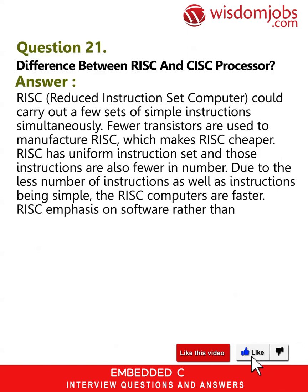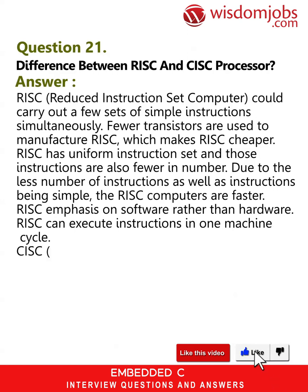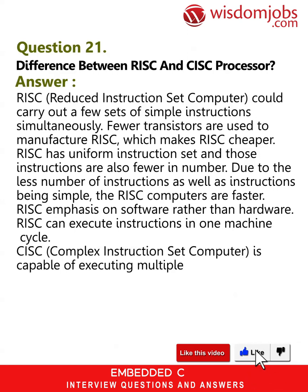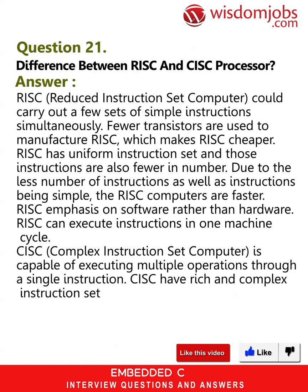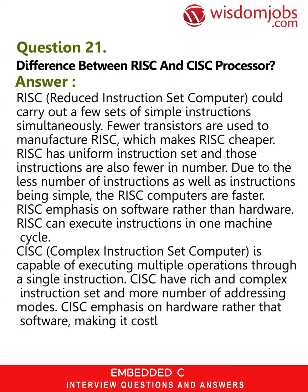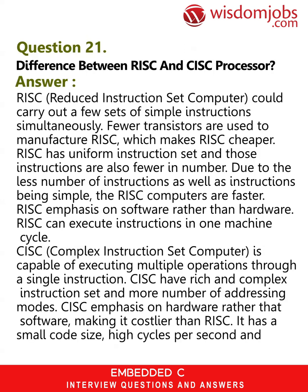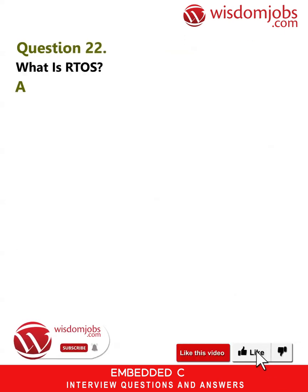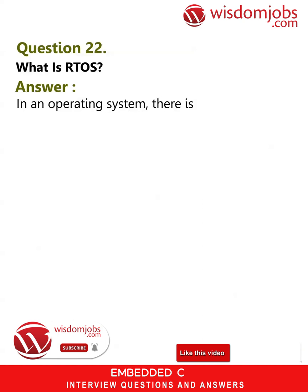RISC emphasizes software rather than hardware and can execute instructions in one machine cycle. CISC (Complex Instruction Set Computer) is capable of executing multiple operations through a single instruction. CISC has an average and complex instruction set with more addressing modes. CISC emphasizes hardware rather than software, making it costlier than RISC. It has a small code size, high cycles per second, and is slower compared to RISC.